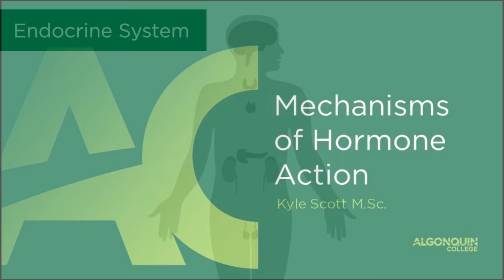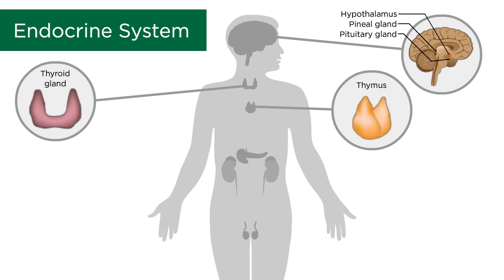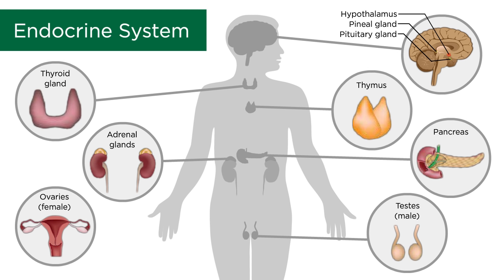The endocrine system is a very important and very involved system within our bodies. It allows our body to communicate over long distances and is a major player in regulating a stable environment, or in other words, preserving homeostasis.